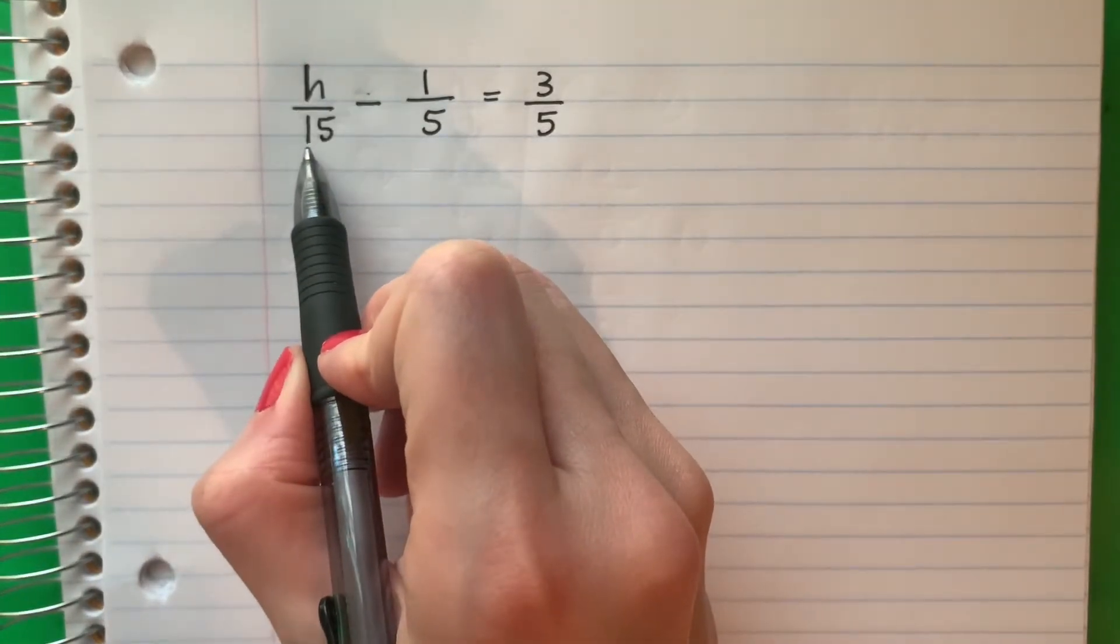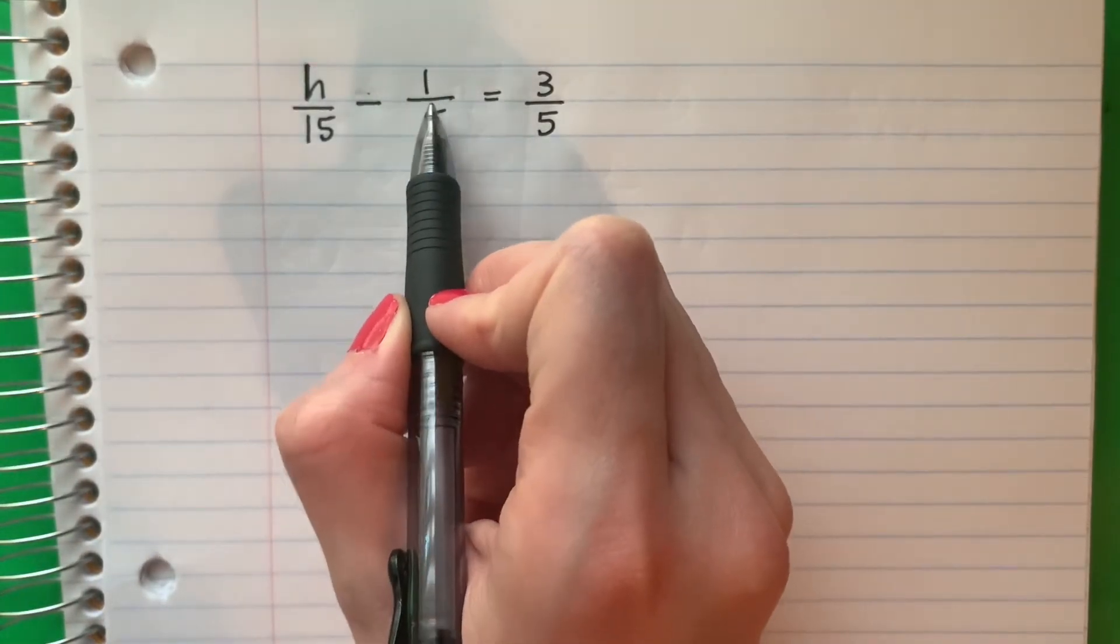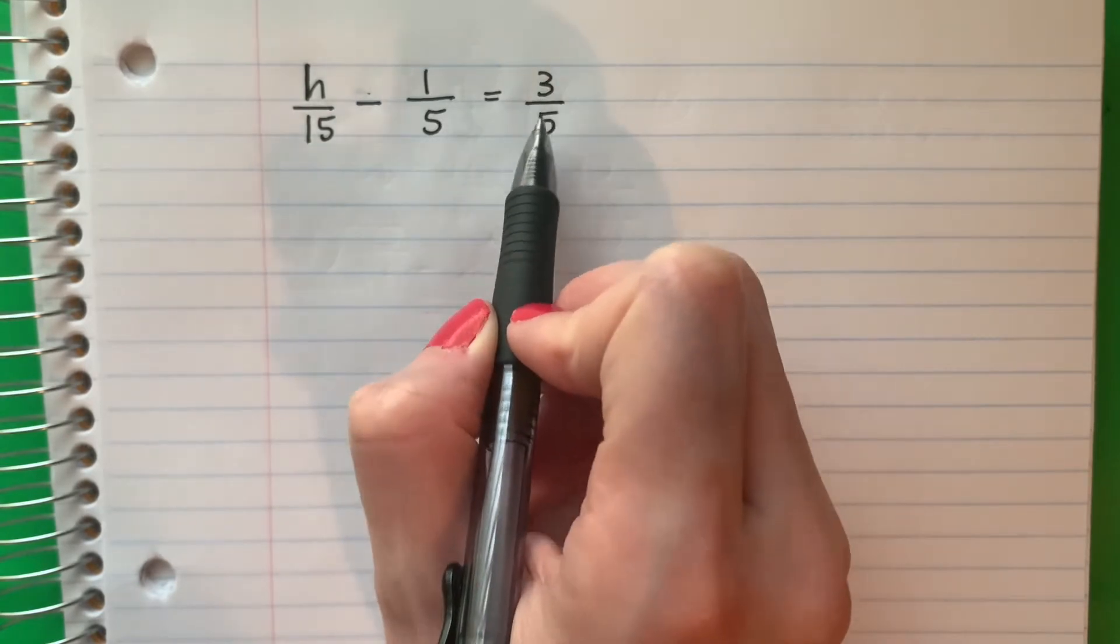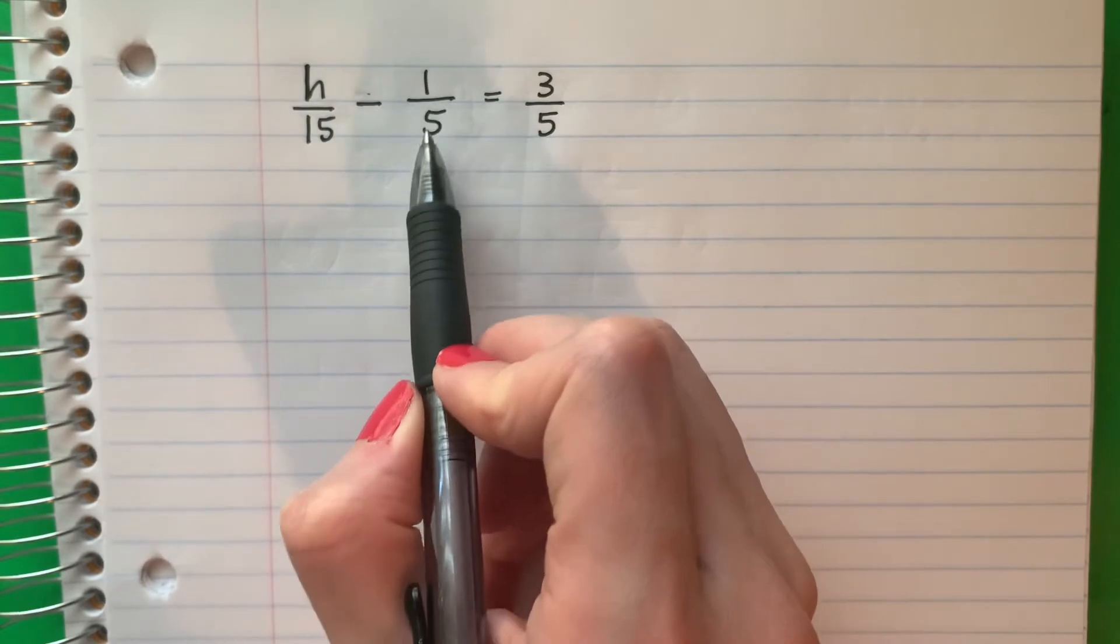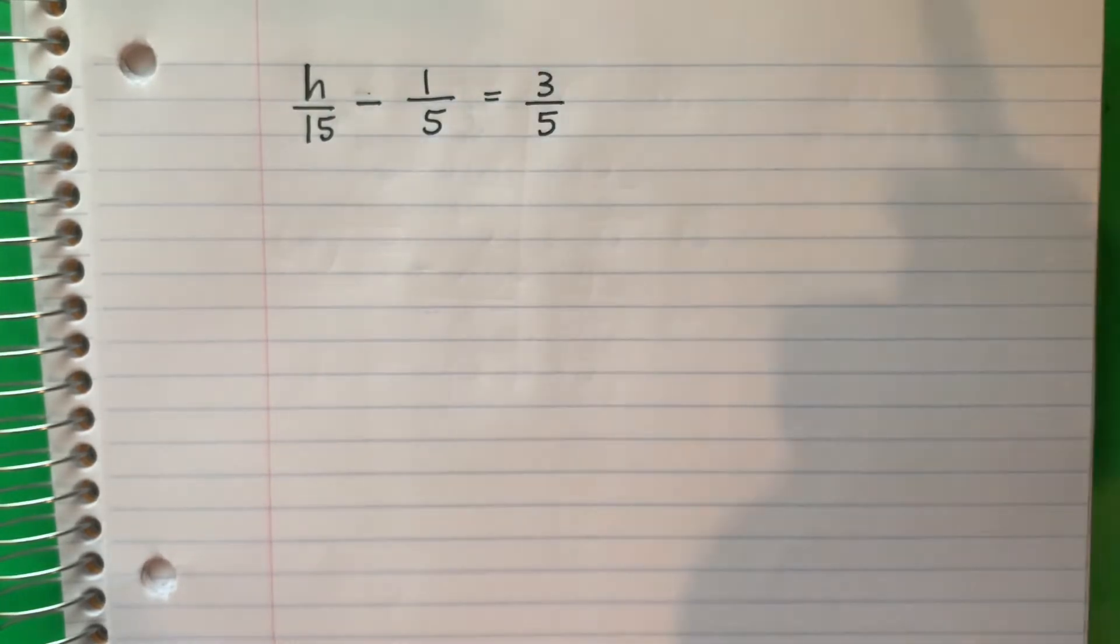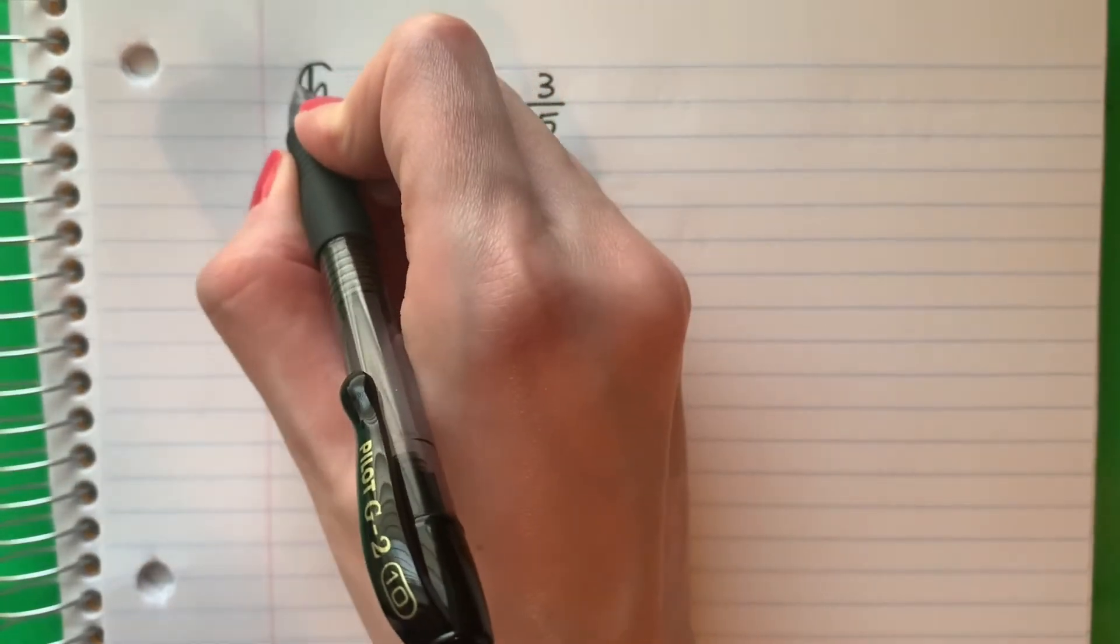H divided by 15 minus 1 divided by 5 equals 3 divided by 5. Or H divided by 15 minus 1 fifth equals 3 fifths. So I want the H alone.